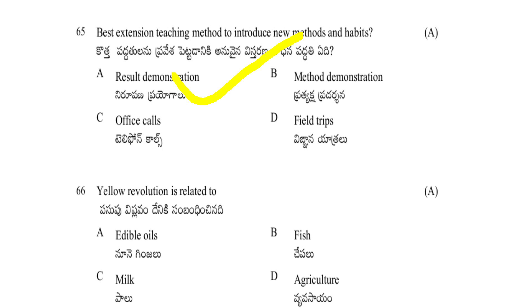Yellow revolution is related to: edible oils, fish, milk, or agriculture. The answer is edible oils — yellow revolution relates to edible oil production. Fish relates to blue revolution, milk to white revolution, and crops to green revolution.